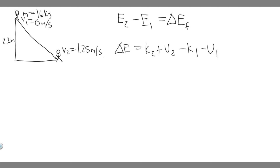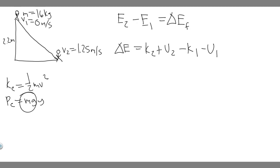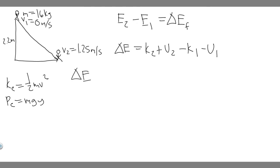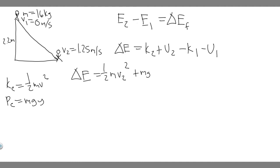The formula for kinetic energy is ½mv², and for potential energy it's mgy, where y is height, m is mass, g is 9.8, and v is velocity. So the full equation is: delta E = (½mv₂² + mgy₂) − (½mv₁² + mgy₁). That's the formula we're going to use.